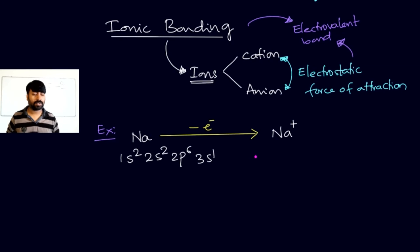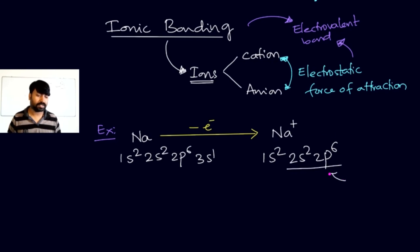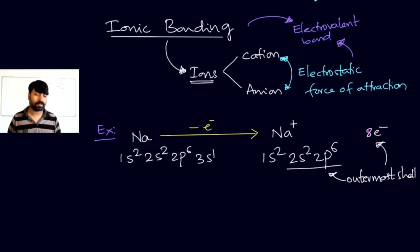The electronic configuration of Na⁺ is 1s² 2s² 2p⁶. Since the 3s¹ electron is lost, there is no longer a 3s electron. The outermost shell is now 2s² 2p⁶, which contains 2 + 6 = 8 electrons. Therefore, Na⁺ is stable because it has achieved the octet.